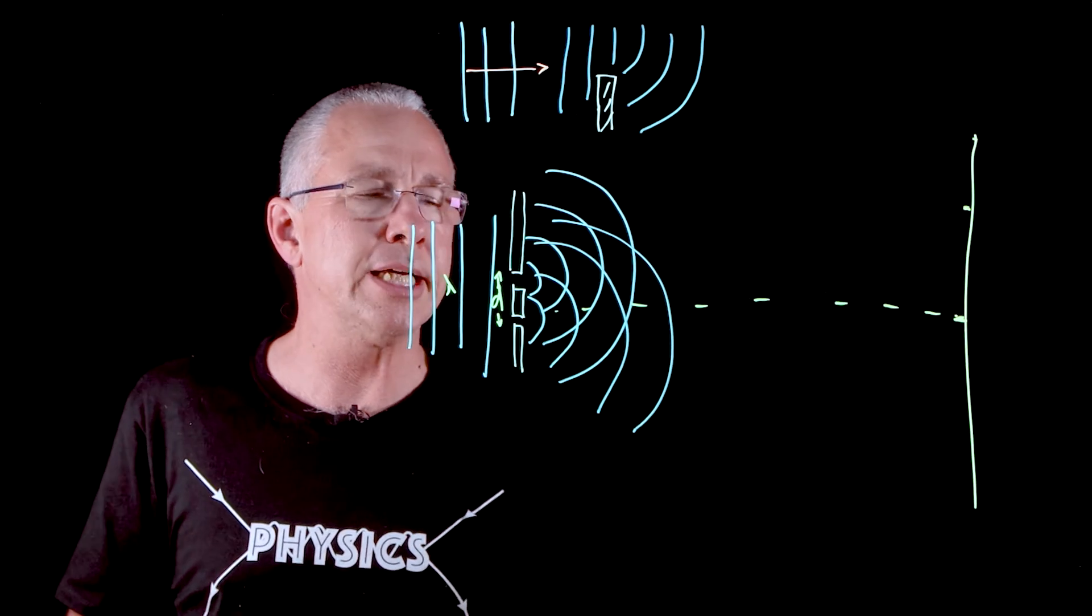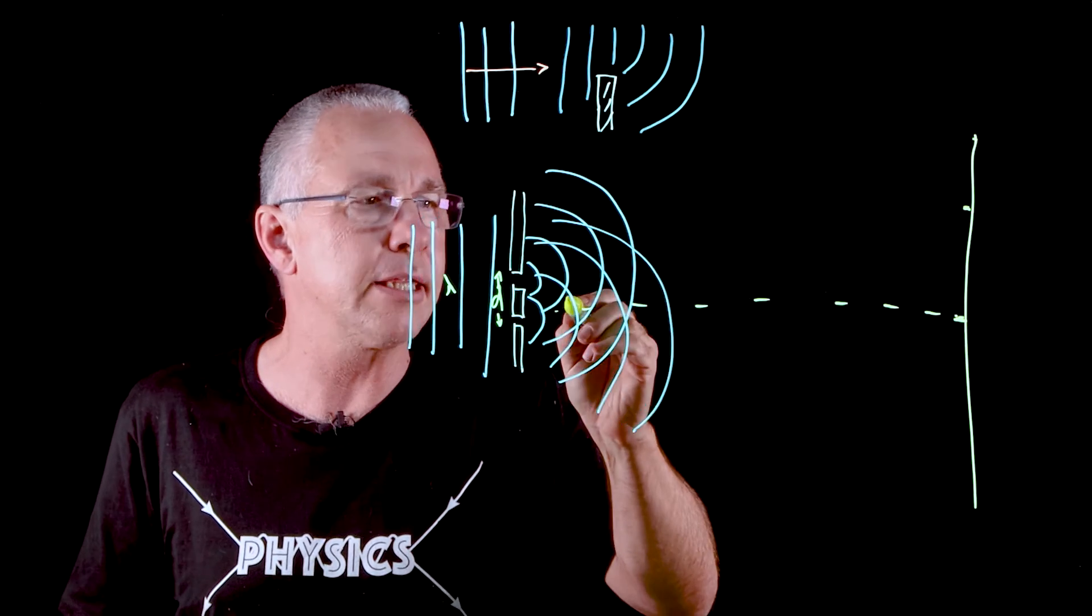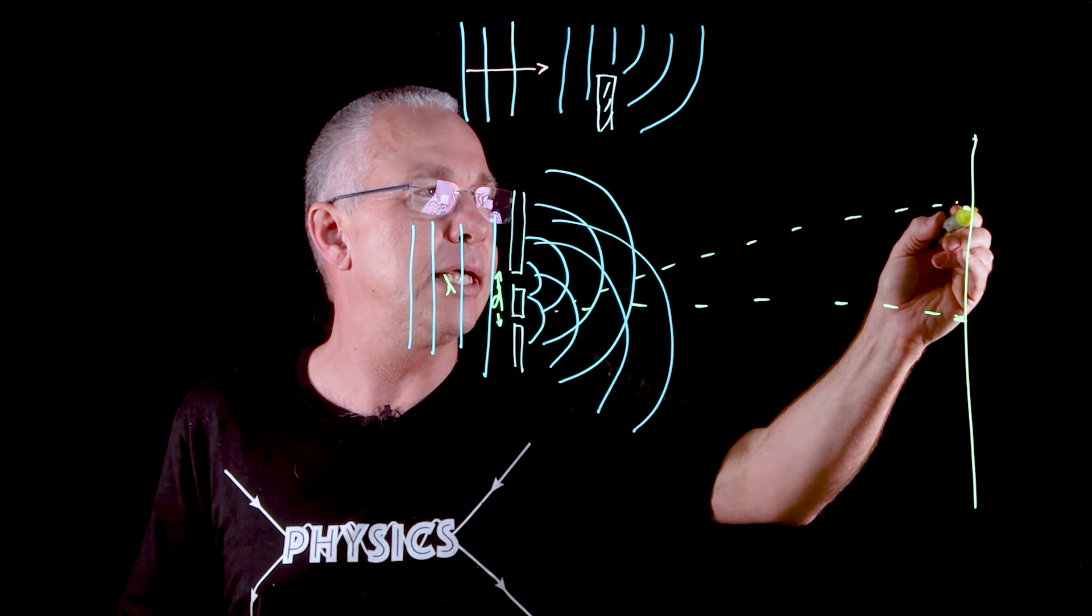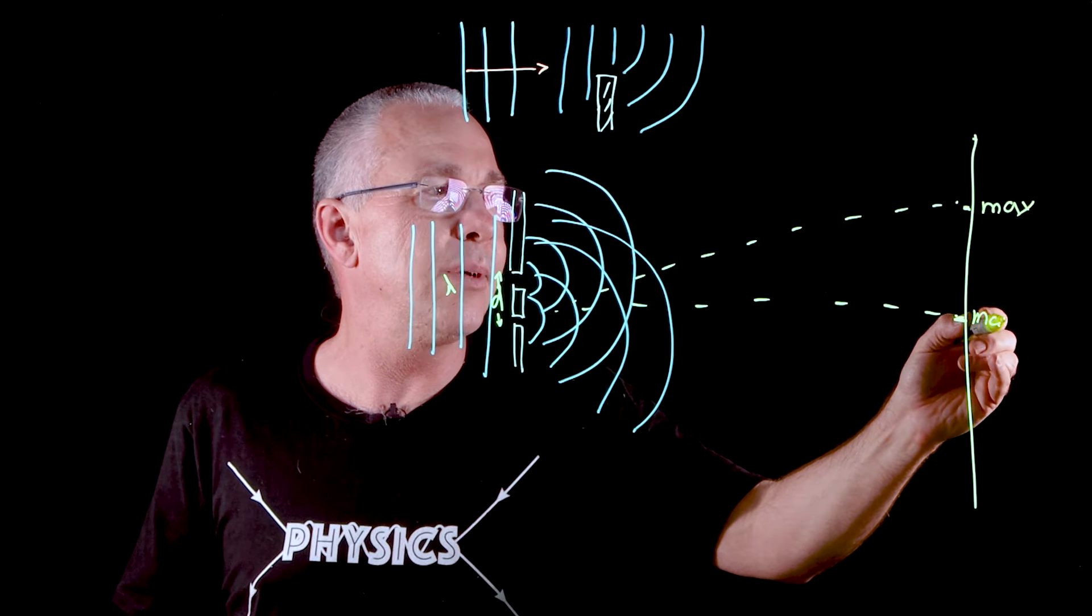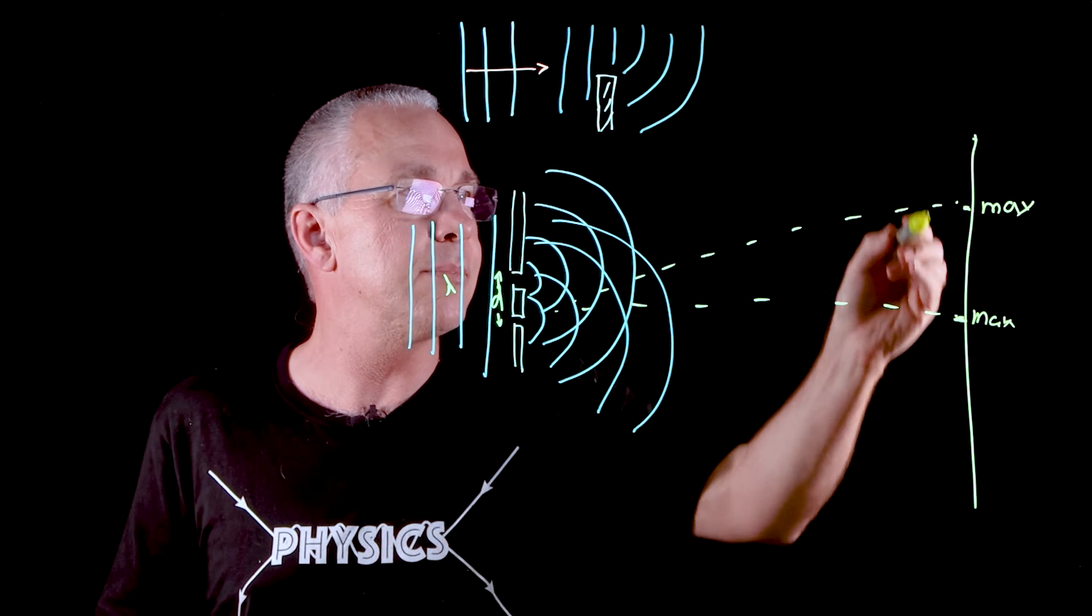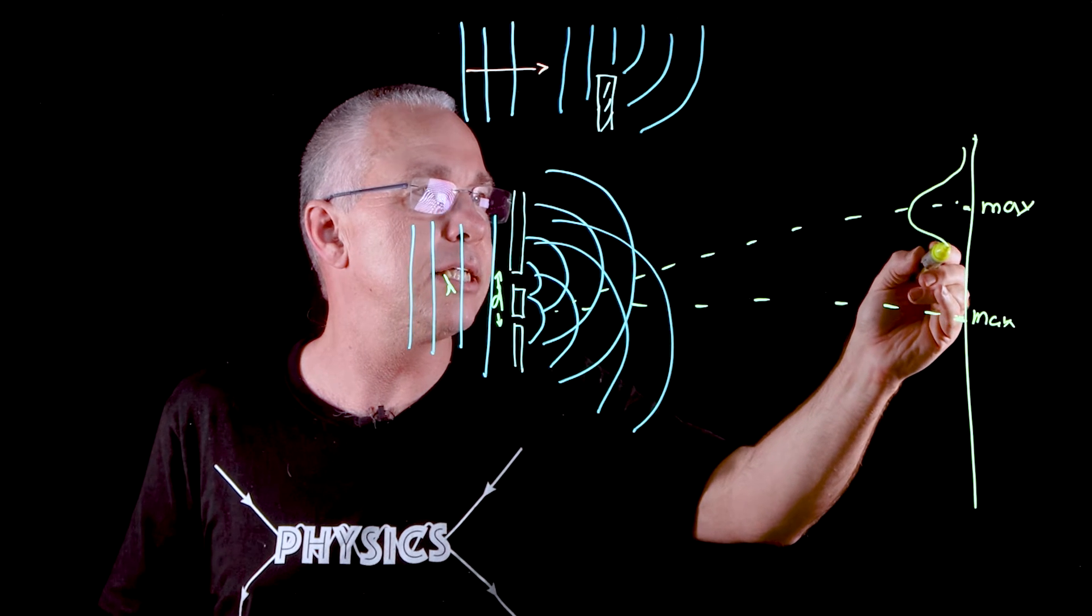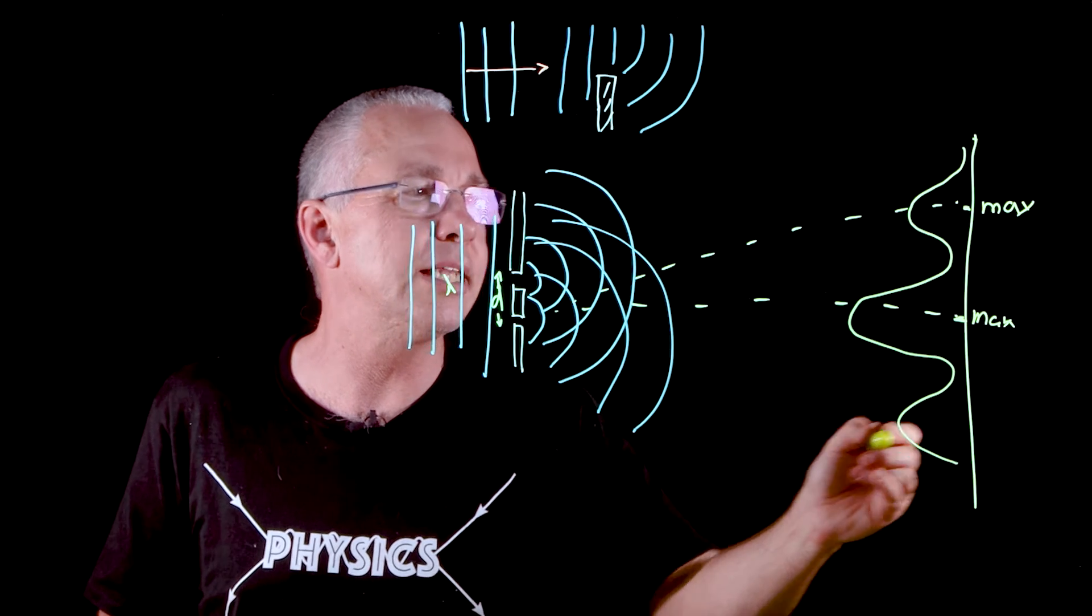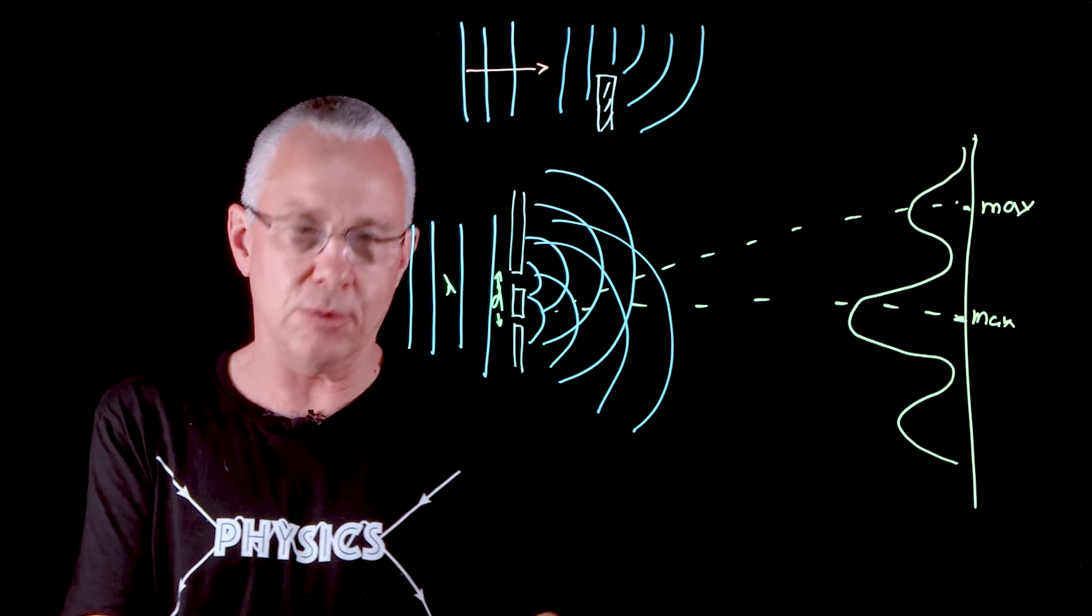We would get a maximum over here at this particular point where they would always constructively interfere. Over here you might also get a maximum because now we have a path difference of one wavelength, so here is a max and here is a max. We end up getting a minimum here, and so if I were to show this as a curve as an intensity, we might get something that looks like this.